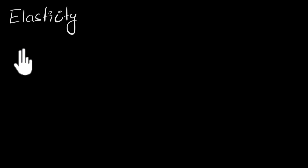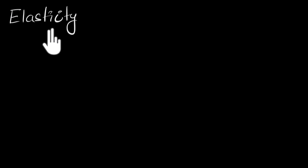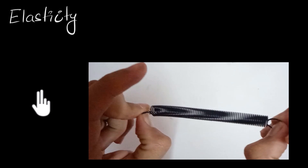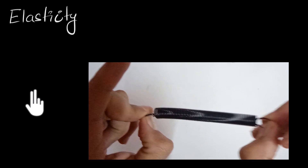Let's talk about elasticity. We may already have some idea about what it is, but in this video we'll try to concretize the exact meaning of this particular term. So let's start with some examples. We all know what elastic materials are and what non-elastic materials are. For example, we may have played with rubber bands or springs — they are elastic in nature.